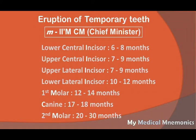One thing to remember in this mnemonic: if same letters repeat, like M repeating twice, the first M is first molar and second M is second molar. Similarly, two I's are there — one I is for central incisor and second I is for lateral incisor. So 'I AM CM': first central incisor erupts, then lateral incisor, then first molar, then canine, then second molar.